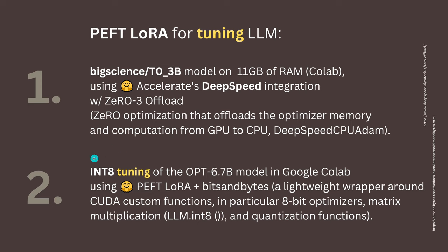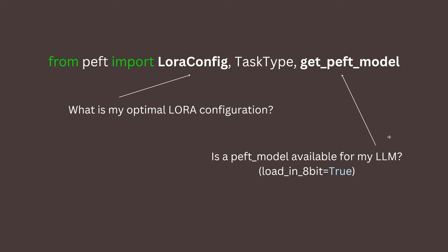Or if you go for integer-8 tuning of some models and want to do it in a free Google Colab notebook, you can use HuggingFace PEFT plus LoRA plus bits and bytes. Bits and bytes is a lightweight wrapper — it uses custom CUDA functions on your GPU's CUDA cores and tensor cores. In particular it is an 8-bit optimizer covering matrix multiplication and quantization functions. In those programs the first line you'll encounter is: from PEFT import LoRA configuration and get your PEFT model.